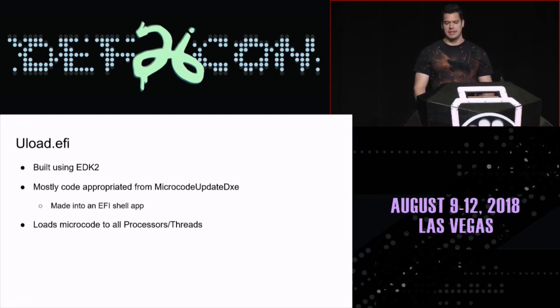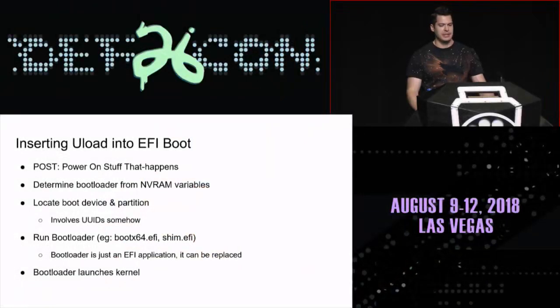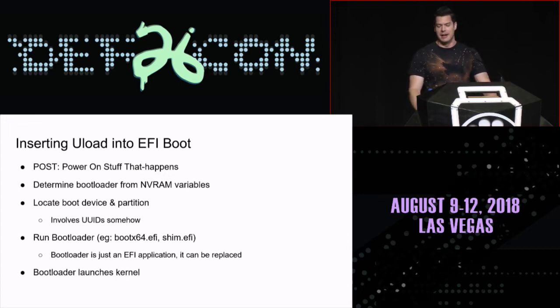I started cutting and pasting code from the existing update routine into a standalone app that I could run myself, and it worked. UEFI now, because this only works for UEFI boot, has a pretty simple flow. It does a whole bunch of stuff we don't need to understand right now, and then it goes and runs an EFI application. Normally that EFI application is your Windows boot loader, but it doesn't have to be — you can change that and run our application first, then run the Windows boot loader after it finishes.